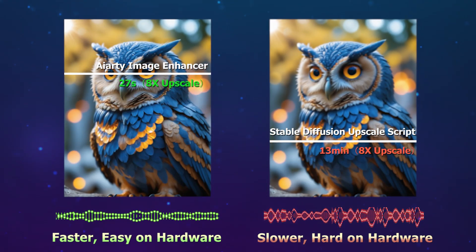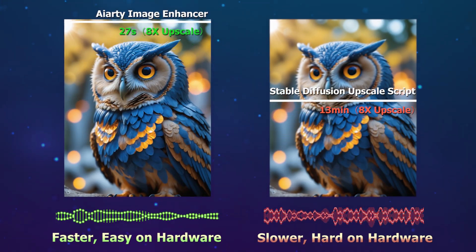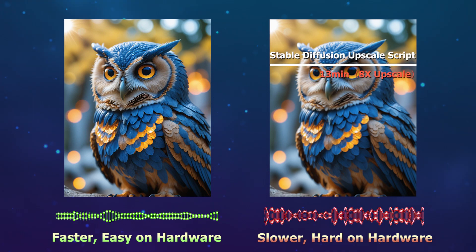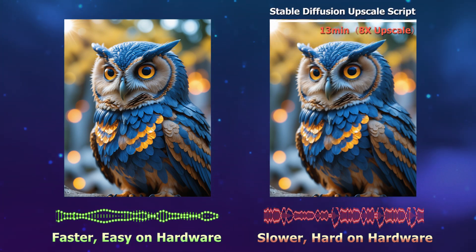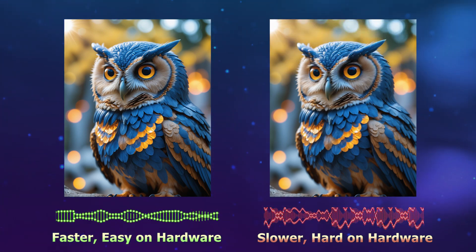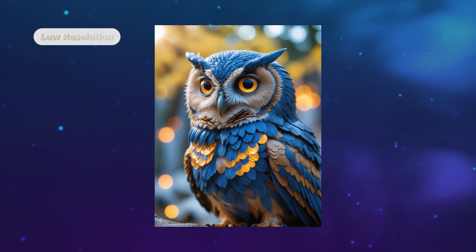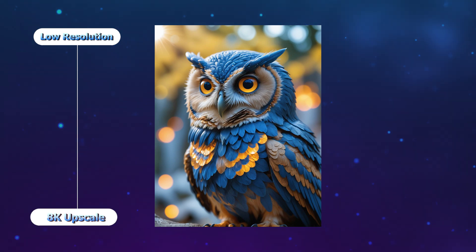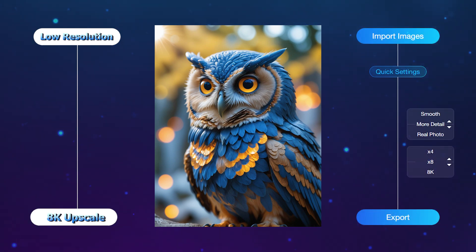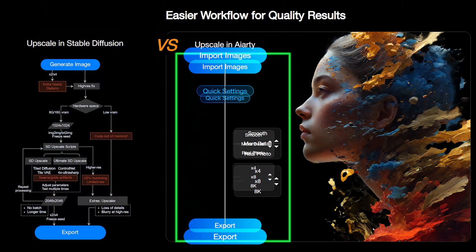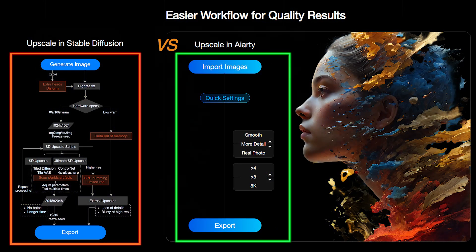AIRD can batch upscale AI images at a faster speed, and it is easy on your hardware. You can directly upscale low-resolution images to 8K in three easy steps in AIRD. While in Stable Diffusion, you need to tweak many parameters and repeat the workflow again and again.